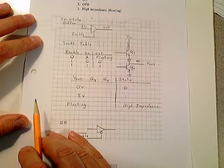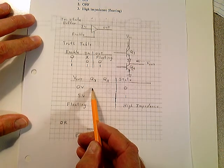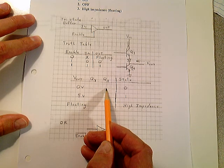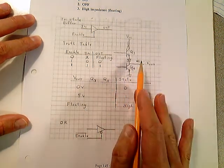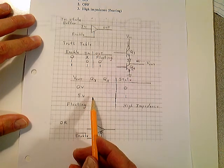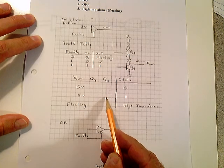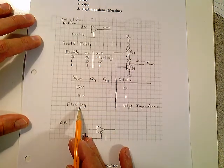Let's look at what the state of Q3 has to be and what the state of Q4 has to be. Q3 has to be cut off. Q4 has to be saturated. What about down here? We want five volts out. A one out here. Q3 has to be saturated. Q4 has to be cut off.